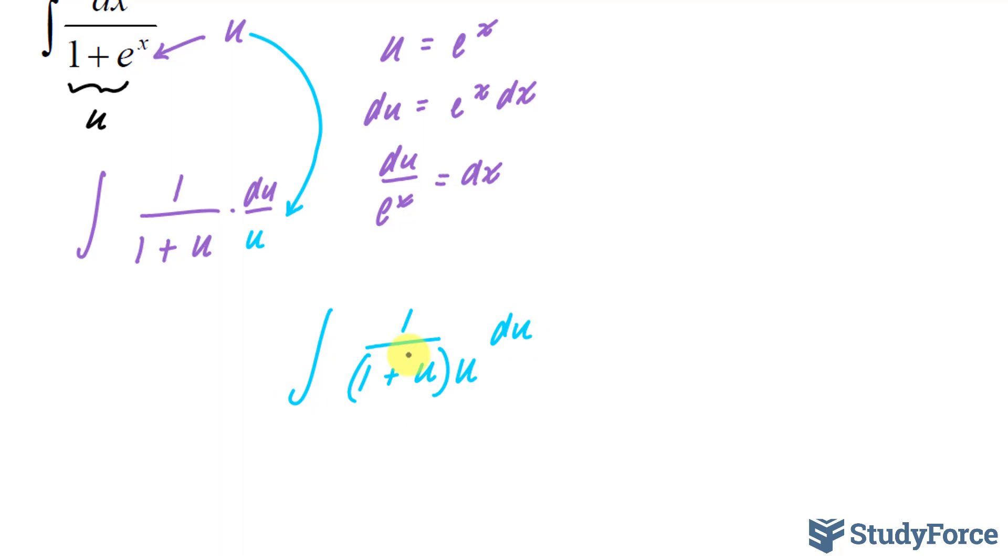Once you have it set up this way, you'll have to use partial fraction expansion. And if you recall, that's when we broke this fraction down into pieces. So for instance, we would set 1 over 1 plus u times u equal to a over this factor, 1 plus u, plus b over this factor, u. And we would have to solve for a and b by finding a common denominator and subsequently finding a and b, which then would make it easier to integrate. And eventually, you would find the answer.